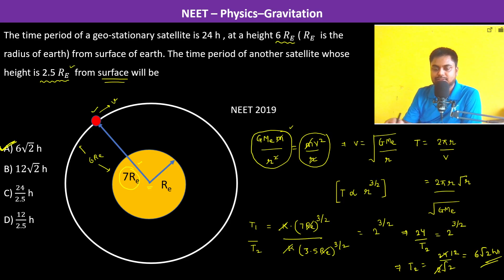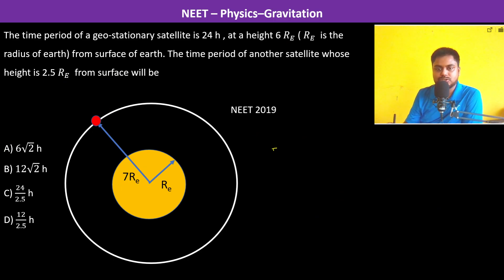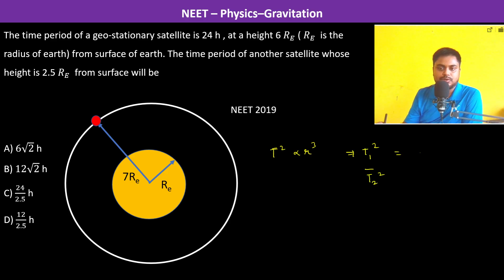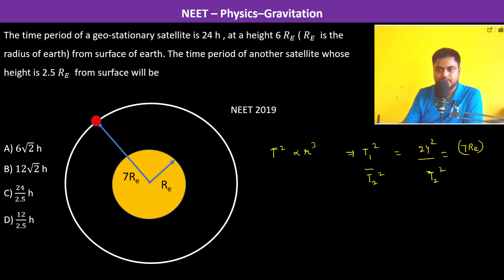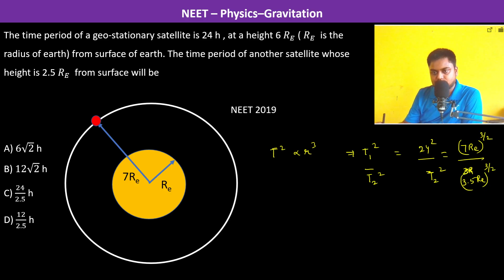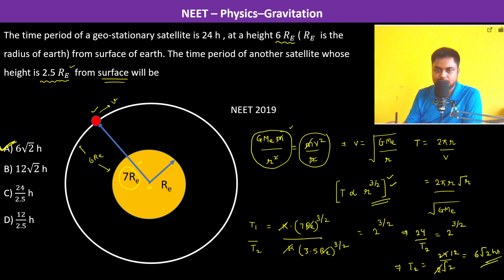Someone may ask why not use Kepler's law directly — actually we have used Kepler's law directly, but I have also proved it. T is proportional to r^(3/2), so T² is proportional to r³, which is Kepler's third law. We can also write T1²/T2² = (7Re)³/(3.5Re)³, and that is how we used Kepler's law here.